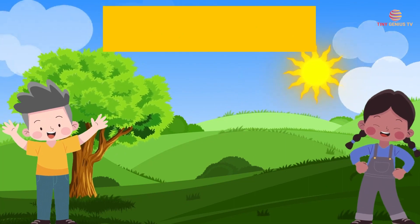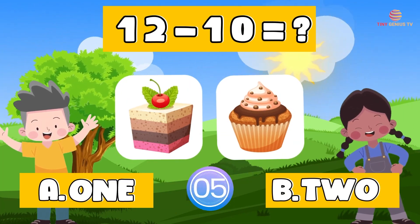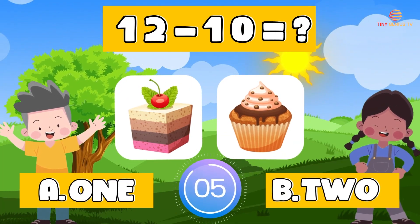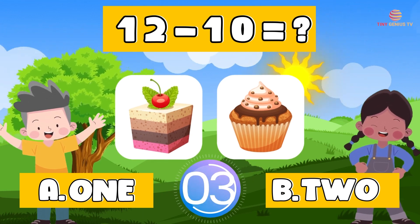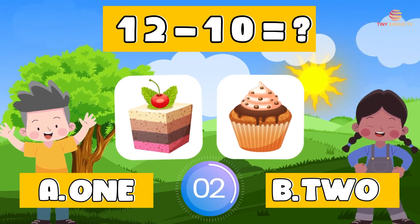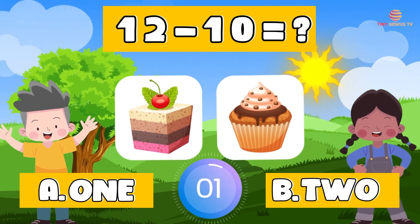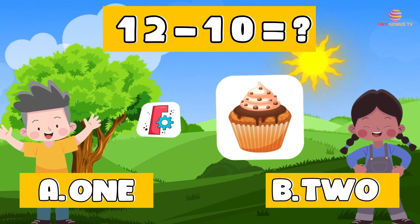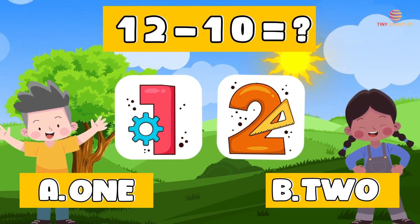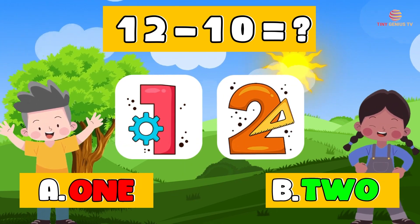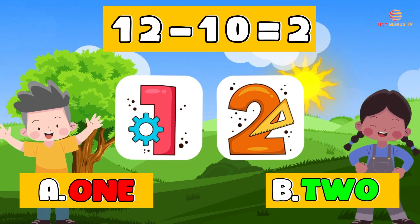How much is 12 minus 10? 1, 2. 12 minus 10 is 2.